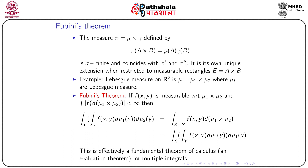It is not very difficult to show that π' and π'' are measures. Also, if E = A × B is a measurable rectangle, then π(E) = μ(A) · γ(B) = π'(E) = π''(E). This holds whenever E = A × B is a measurable rectangle. Once we have defined everything, we can now state Fubini's theorem, which is very important.